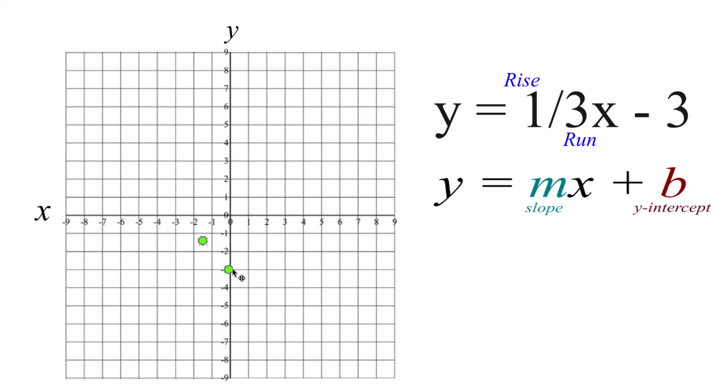We go to our point here, our y-intercept. We rise the 1, go over 1, 2, 3. Do it again from this point. Rise the 1, go over 1, 2, 3. You can see we have our three points.